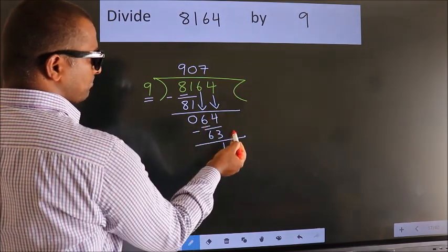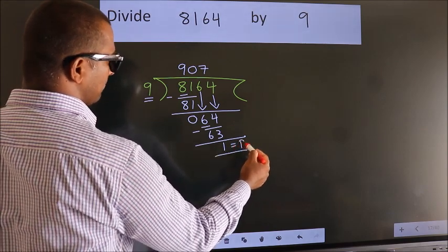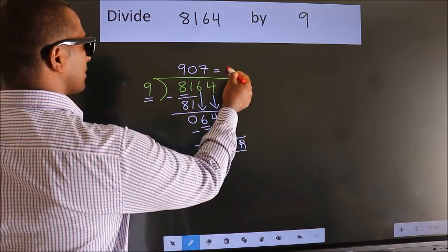No more numbers to bring down. So we stop here. This is our remainder. This is our quotient.